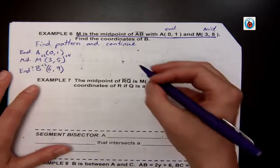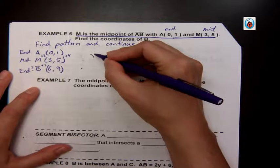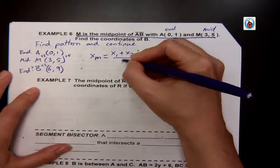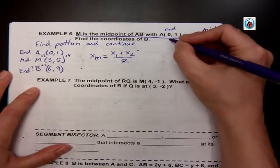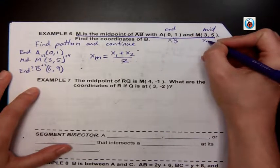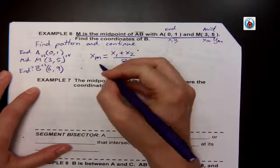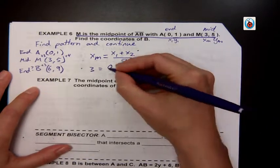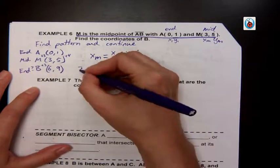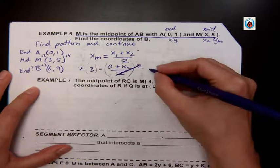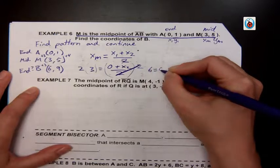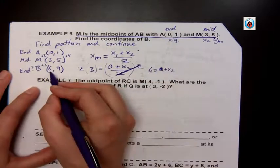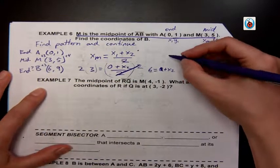Some people like to plug it into my formula and do it algebraically. So my midpoint of x equals x1 plus x2 divided by 2. I plug in my x1 and my x midpoint, and so I get 3 equals 0 plus x2 divided by 2. Then I solve by multiplying both sides by 2. That cancels out, so now I have 6 equals 0 plus x2. Of course, the 0 doesn't matter, so 6 equals x2, which is the same as I got there.